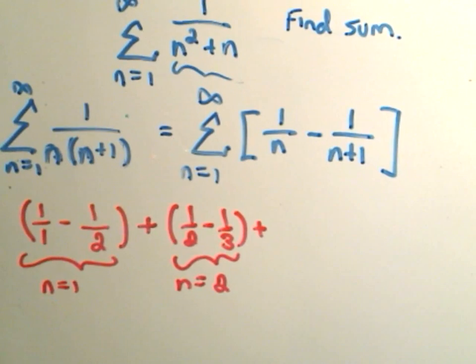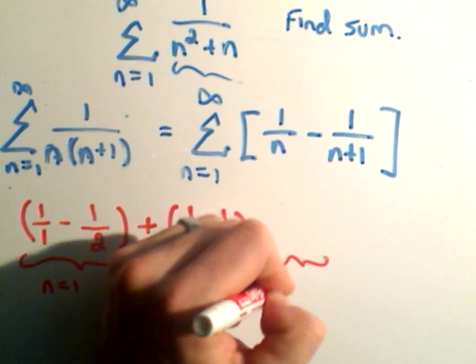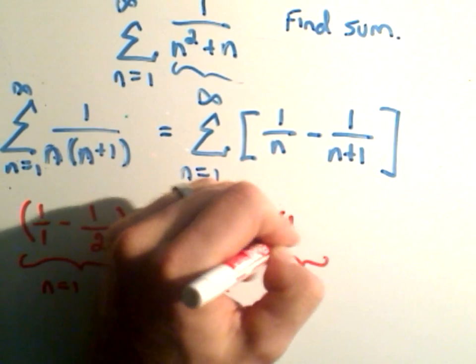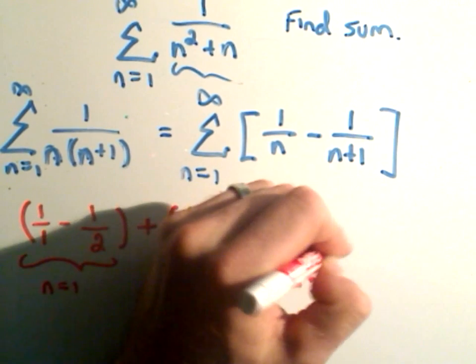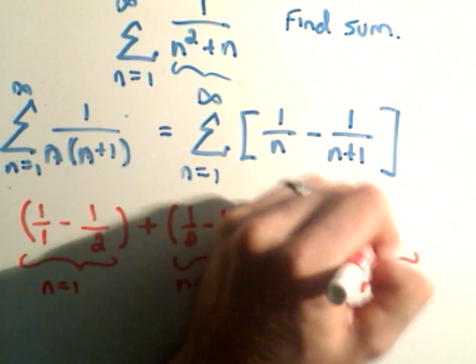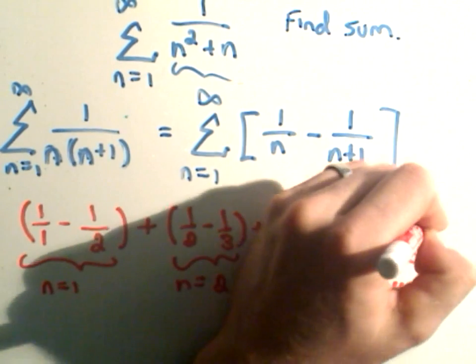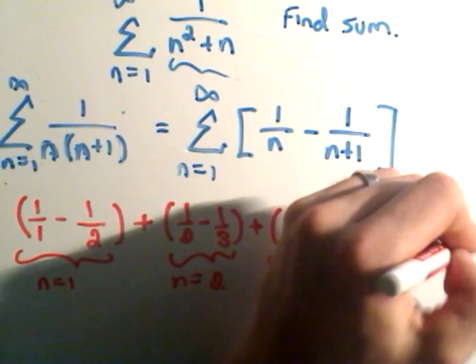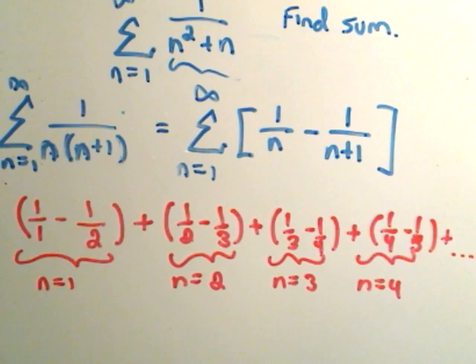Plus, I'll have to plug in the n equals 3 term. So I'll get 1 over 3 minus 1 over 4. Maybe I'll do one more. n equals 4. I'll get 1 fourth minus 1 fifth. And notice this pattern is just going to continue on forever and ever and ever.